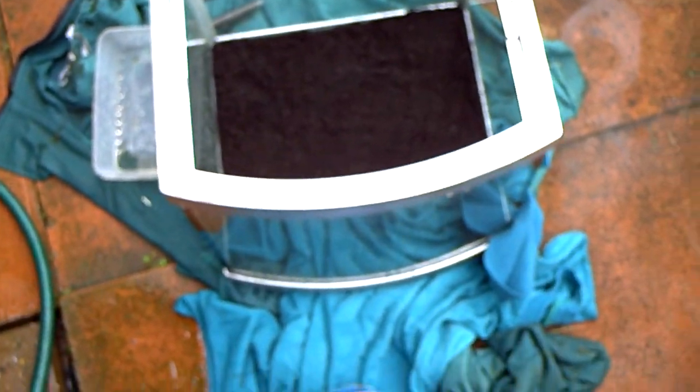Okay, part three. So I've added the layer of sphagnum peat moss into the tank, and that's about an inch. Sphagnum peat moss does not contain any nutrients.